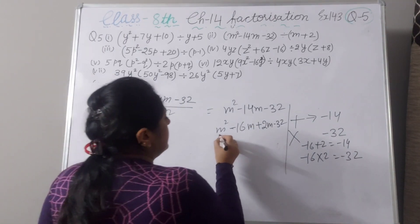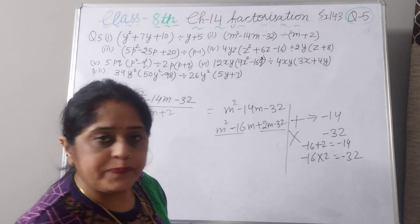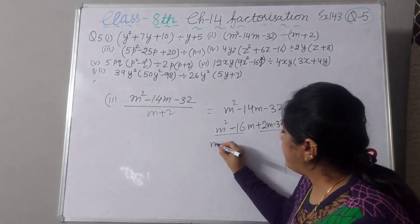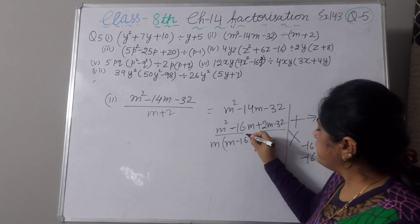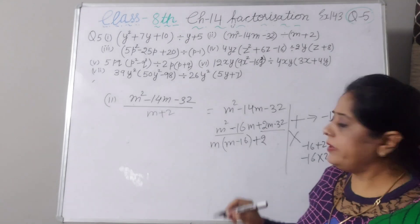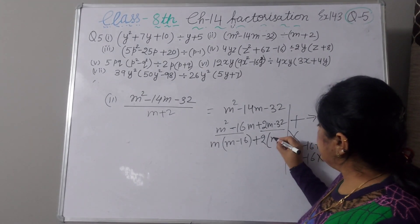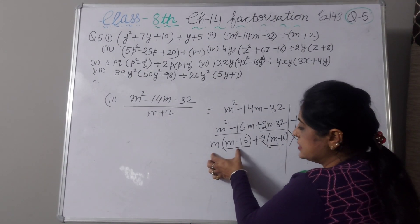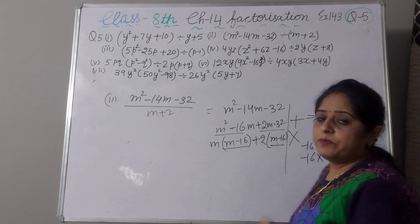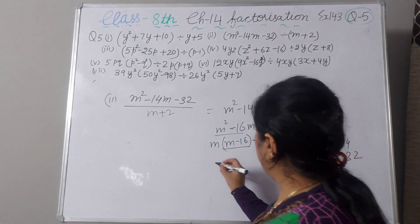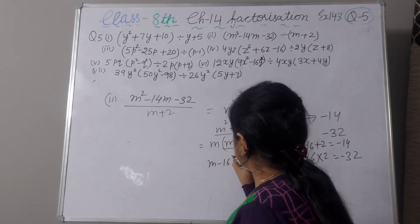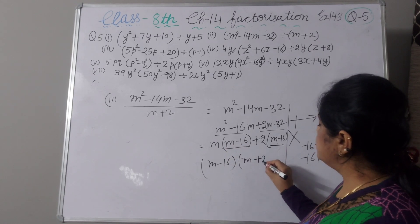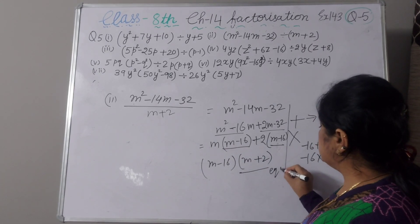Now we will make the pairs. From m squared minus 16m, take m as common to get m(m minus 16). From 2m minus 32, take 2 as common to get 2(m minus 16). These are products of two terms, and m minus 16 is common. Take m minus 16 as common, and you are left with m plus 2 inside.